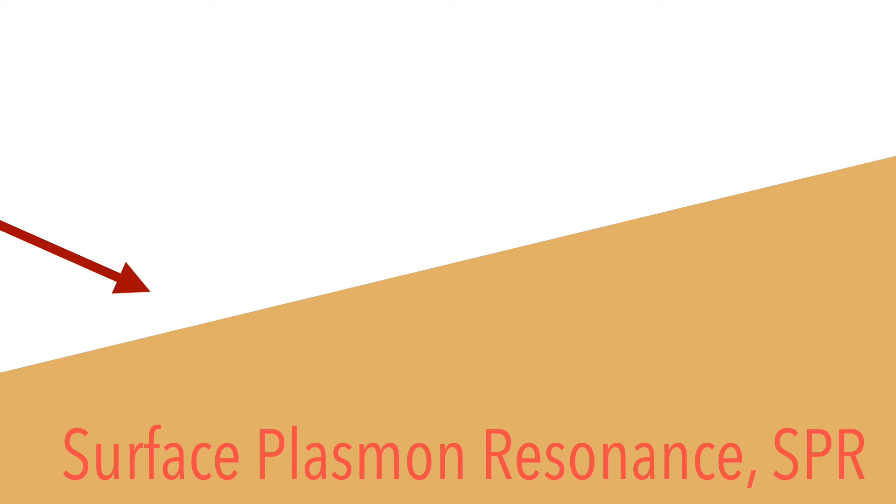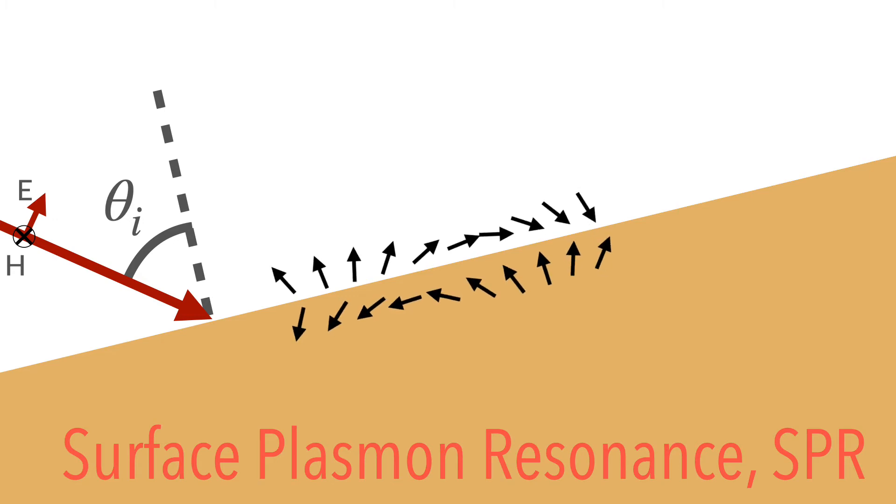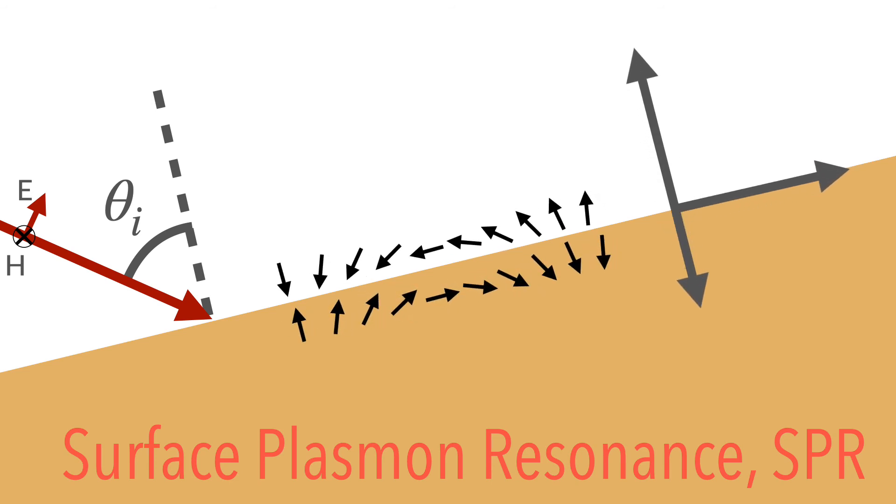Consider a p-polarized wave incident to the dielectric-metal interface at an angle theta i greater than the critical angle. The electric field parallel to the surface acts as a driving force to induce longitudinal oscillations called surface plasmons. These oscillating charges have an associated electric field that penetrates into the dielectric and the metal.